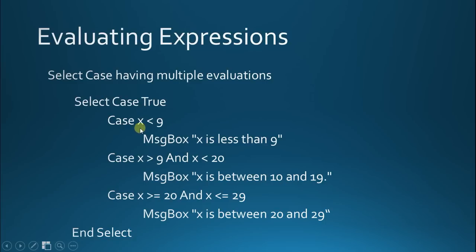So, if you want to have multiple evaluations for your select case, where you only want an instance, you only want a code block to run when two or more conditions are met, then you're going to need to use the select case true statement. And then you're going to need to actually put your variable or put your initial, your first value in each one of these, just like you would in the if statement. So, what we're doing is we're saying select case true, and our first evaluation here is case where X is less than 9. So, if X is less than 9, then run this message box.